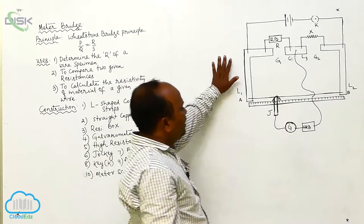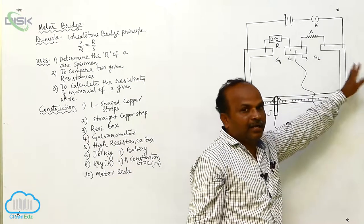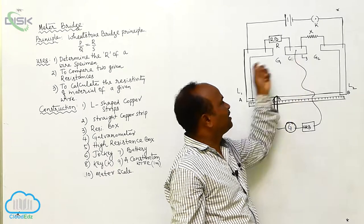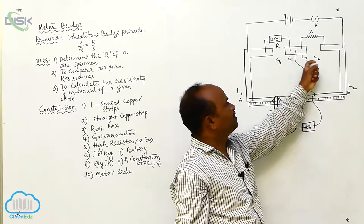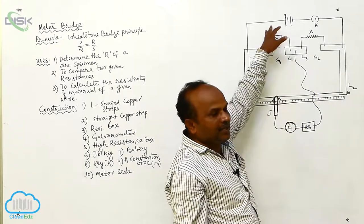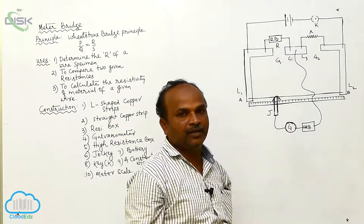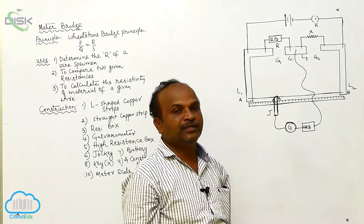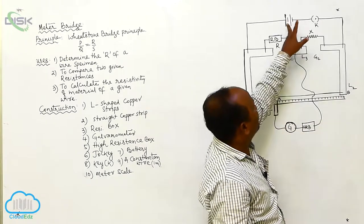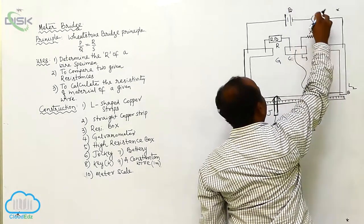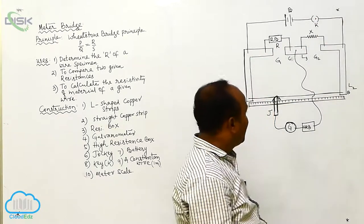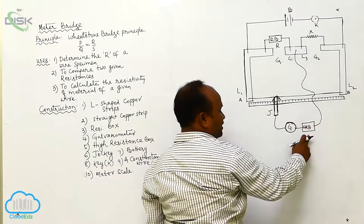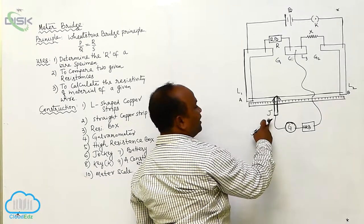The two L-shaped metal strips are arranged oppositely on the wooden box. L3 is the flat metal strip placed between L1 and L2 to create the two gaps, G1 and G2. In G1, a particular resistance R is maintained using a resistance box. In the second gap, the specimen whose resistance is to be calculated is kept. Between A and B, battery B and key K are connected in series. From the midpoint of the metal strip, the high resistance box, galvanometer, and jockey are connected in series.